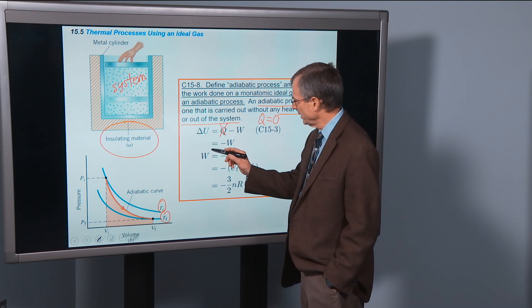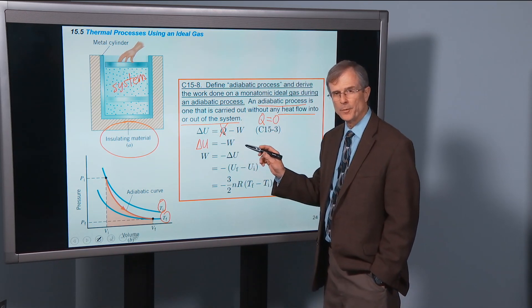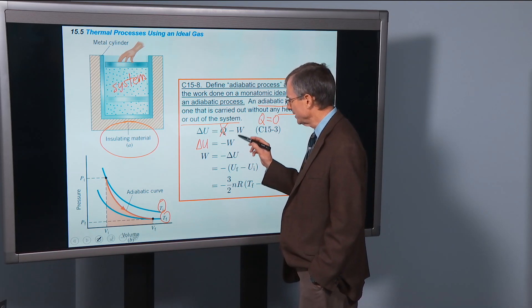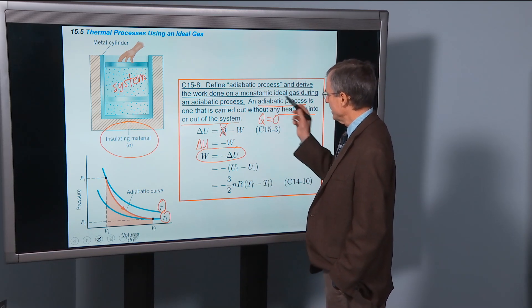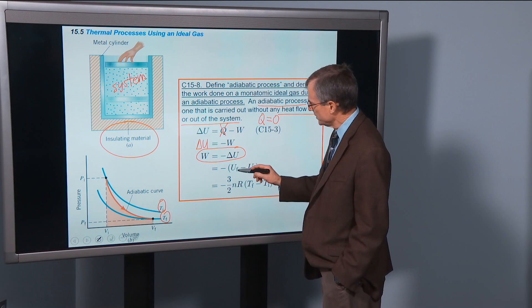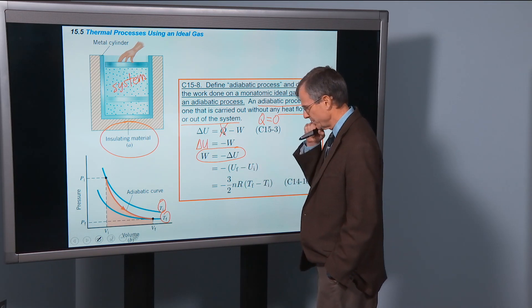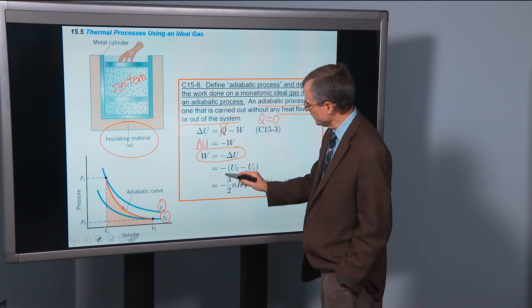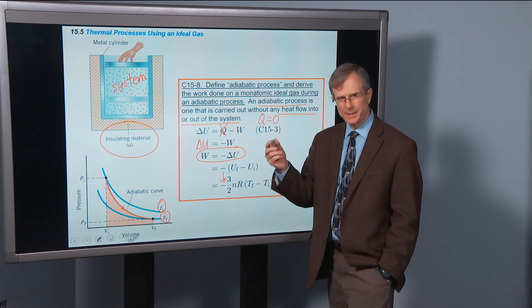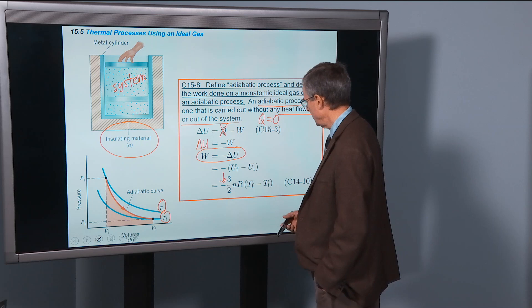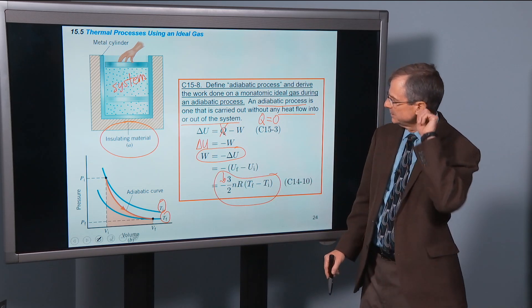And the first law of thermodynamics says that delta U is just the negative of the work. Well I can turn that around and say that the work is the negative of delta U. And if it's an ideal monatomic gas, which it is, then I have that minus sign, the final internal energy minus the initial internal energy. And we know that the internal energy for an ideal monatomic gas is 3 halves nRT. And so there you go. There's the work done for an adiabatic process.